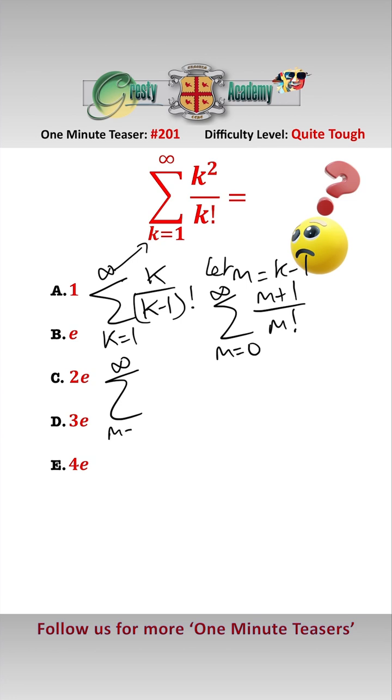and we can split that to be the sum between m equals 0 and infinity of m over m factorial, and the sum between m equals 0 and infinity of 1 over m factorial. This is a well-known summation,